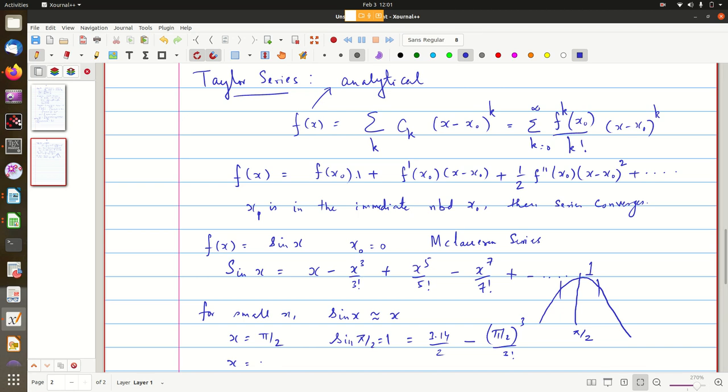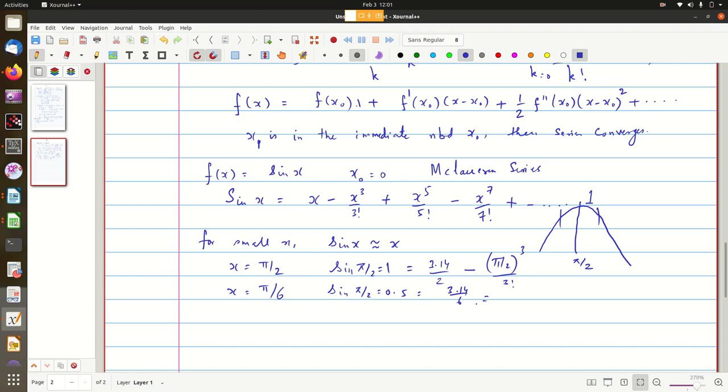So, whereas, if you take x equal to something like pi by 6, 180 by 6 is 30, sin 30 is half, we all know that. Sin pi by 2 is 0.5, and you can see here, you will get pi by 6. So, 3.14 by 6. How much is that? You can easily calculate. It will almost come to be very close to 0.5. So, that is the basic idea. So, I want you to do this in G numeric.